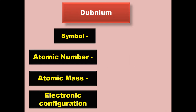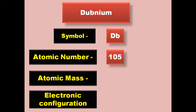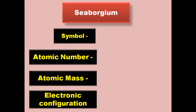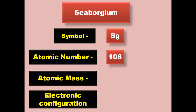Dubnium has symbol Db, atomic number 105, atomic mass 268, electronic configuration [Rn] 5f14 6d3 7s2. Dubnium is a transition metal and exists in solid form at room temperature.